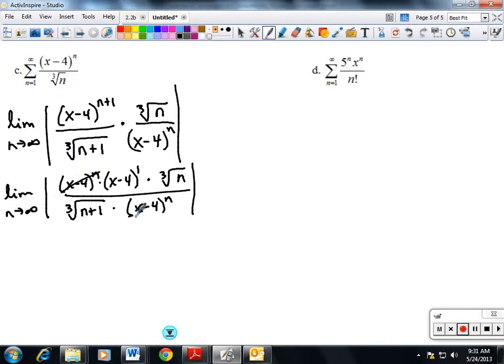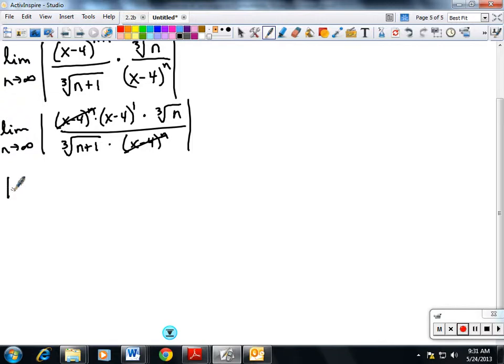(x-4)^n cancels. Remember that the limit only deals with the n, so I can pull my x term out. So it would be the absolute value of (x-4) times the limit as n goes to infinity of the cube root of n over the cube root of (n+1).